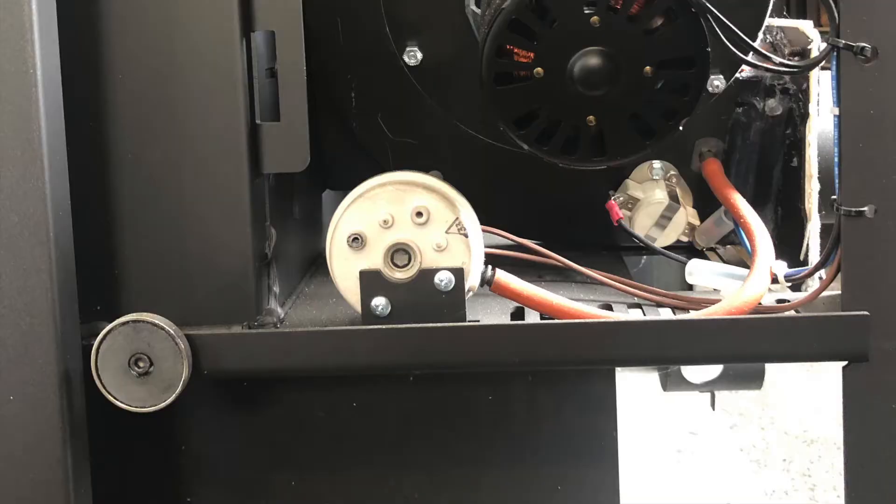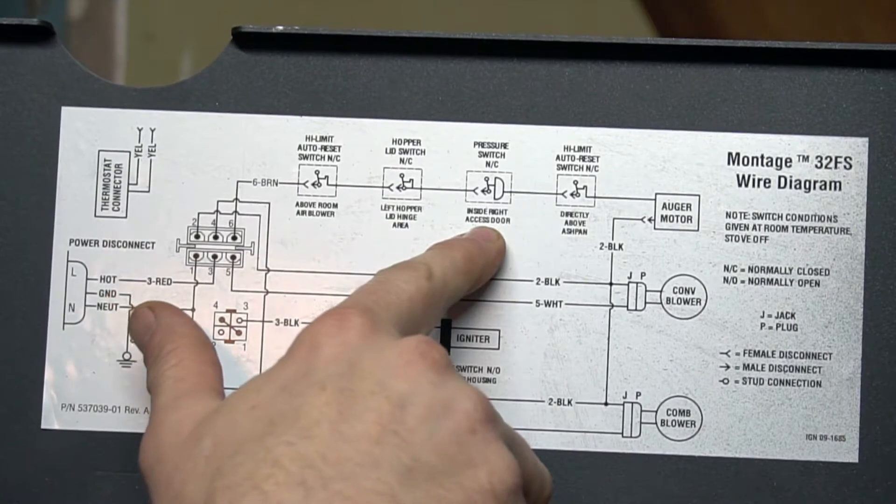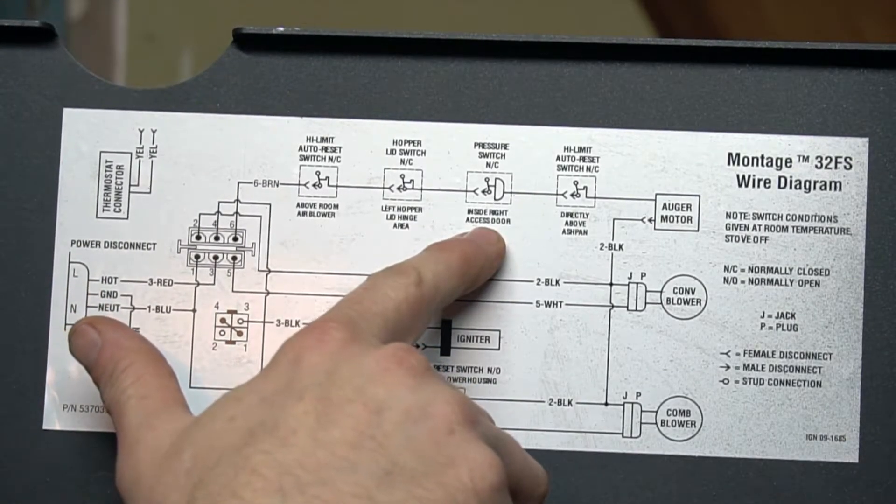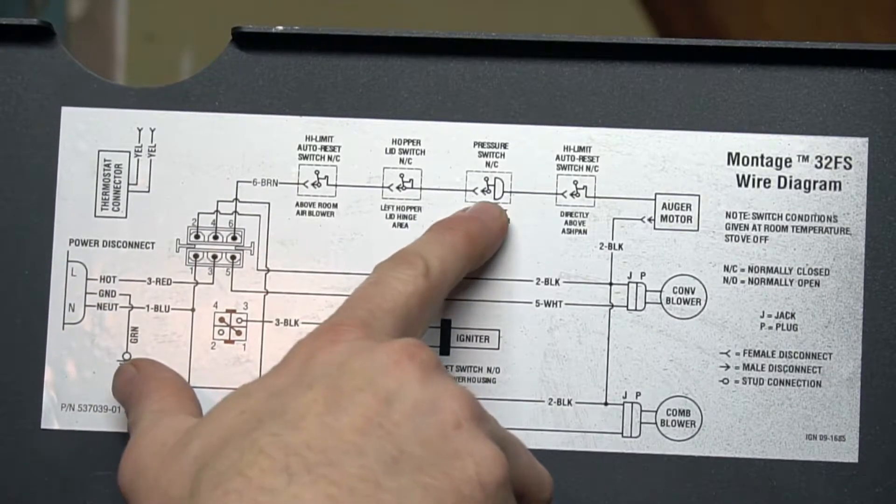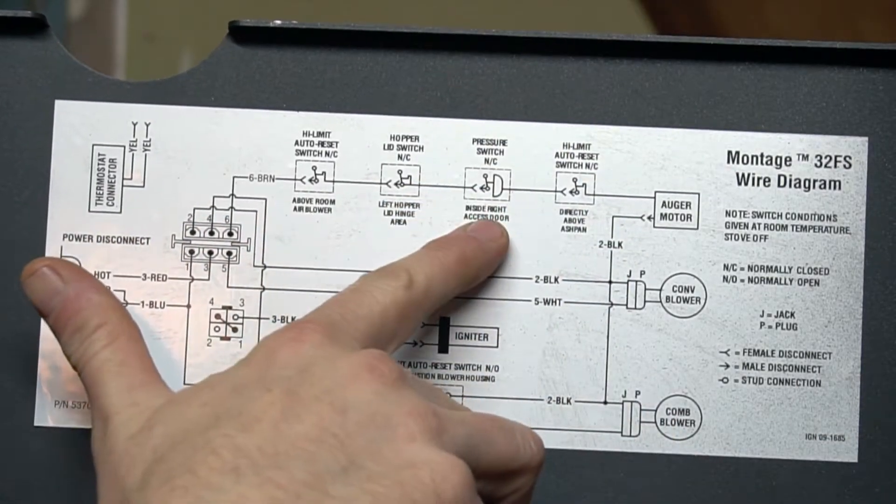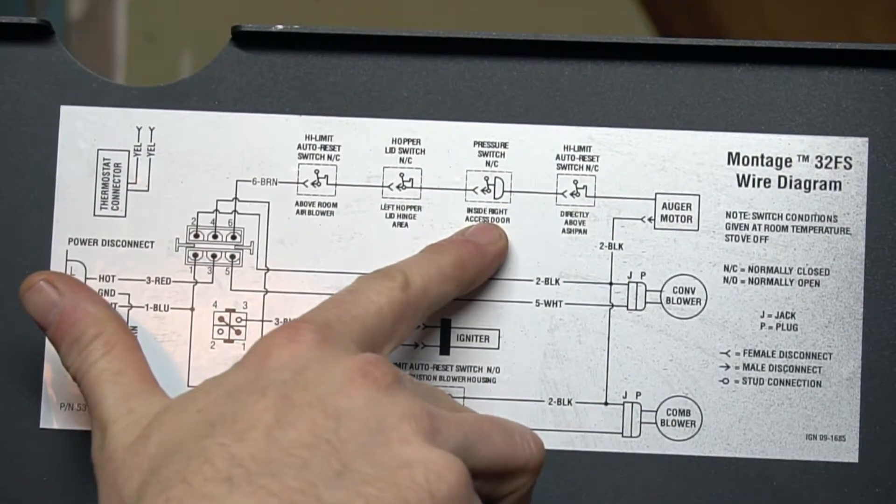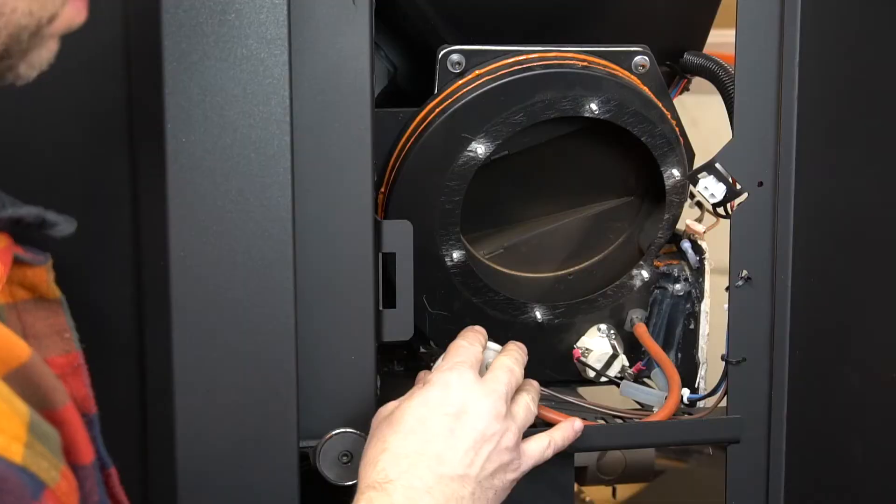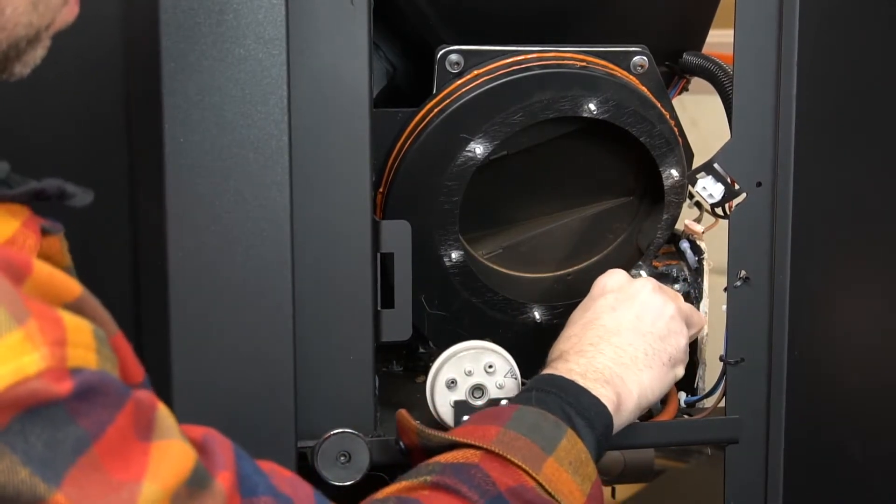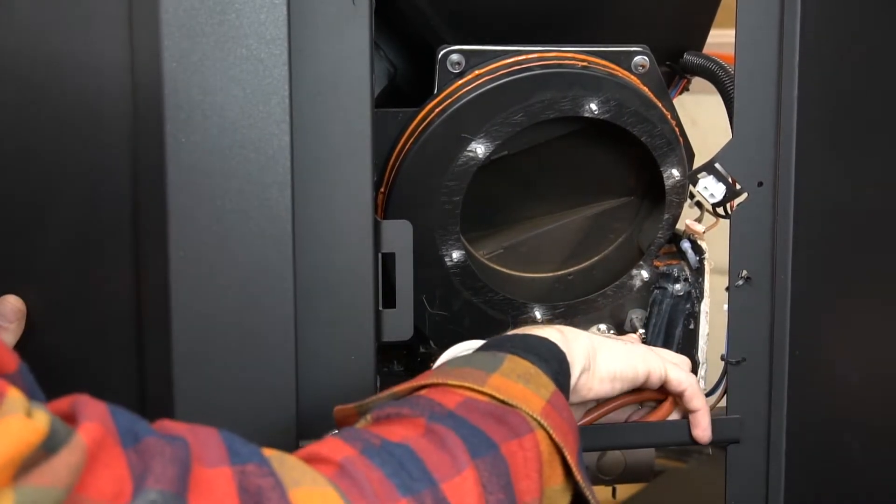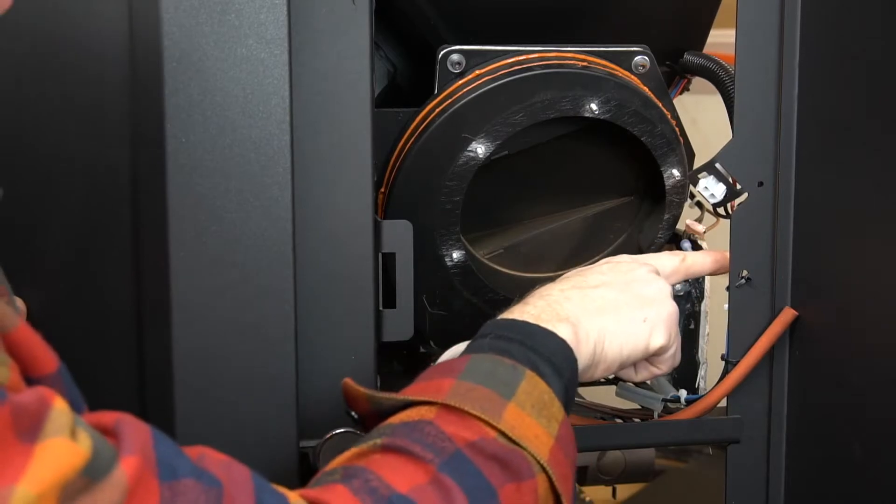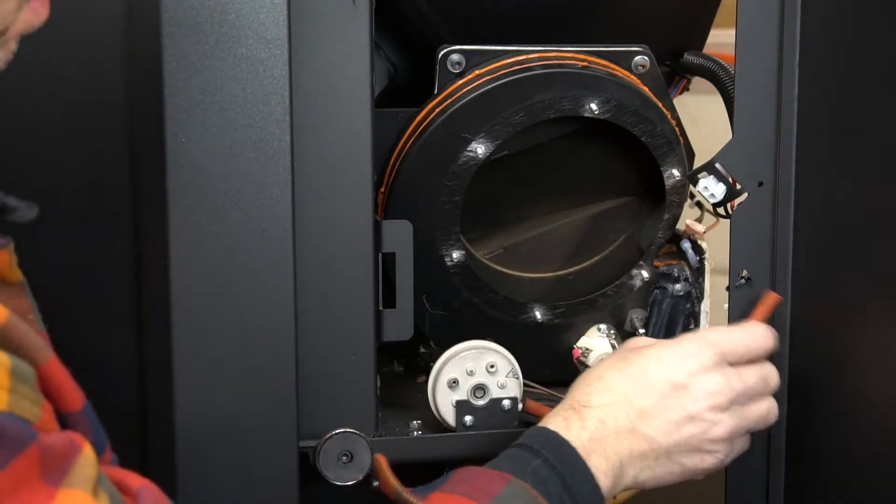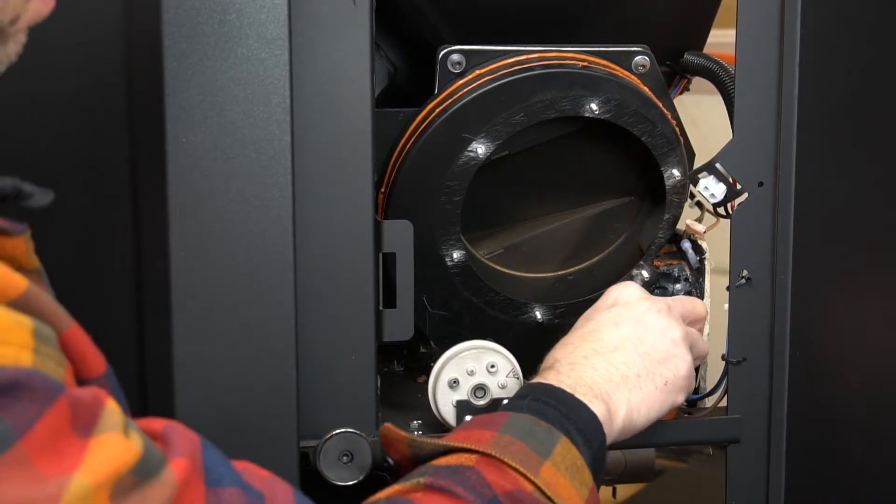The pressure switch is on the other side and that is also NC, which is normally closed. So when at room temperature it's conductive. If there's any back pressure in the vent, it's going to open that circuit. So to test this switch really quickly, if you're not getting any feed and this one's okay and this one's okay, disconnect the orange hose from the exhaust. That will relieve the pressure off the switch and see if it will feed then. And if it does feed then, you know that you have a problem in the vent.